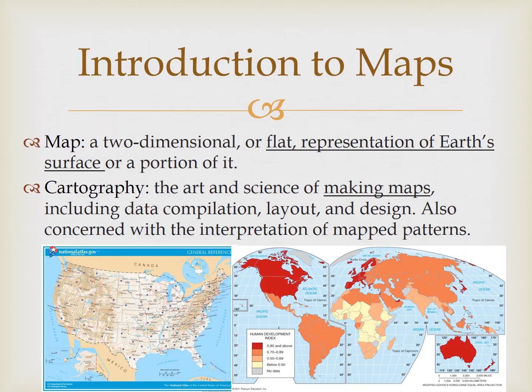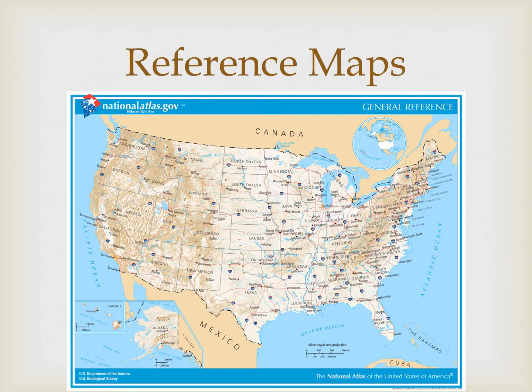Reference maps focus on places, while thematic maps focus on data. Reference maps show locations of places and geographic features, but without analysis or interpretation. These can include physical maps, political maps, road maps, or even subway maps. This reference map shows us where things are, including physical features like mountains, as well as the names of states and major highways.